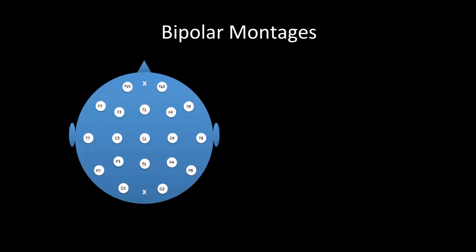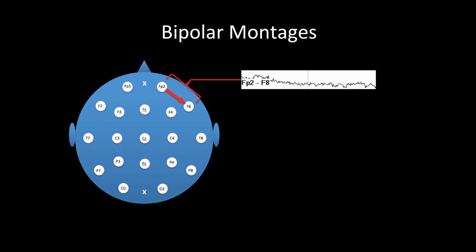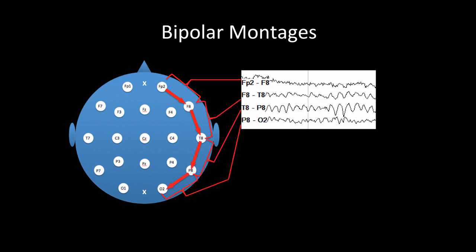EEG can be displayed in different ways, which are all known as montages. The most common type is a bipolar montage. Here, on a picture of the head from the top down, if we display the difference between FP2 and F8 as a single tracing, we call this a channel or derivation. Moving posteriorly, we look at the difference between F8 and T8 as a different channel. Continuing posteriorly, we have a string of recordings from the front to the back of the head linked together, called a chain.